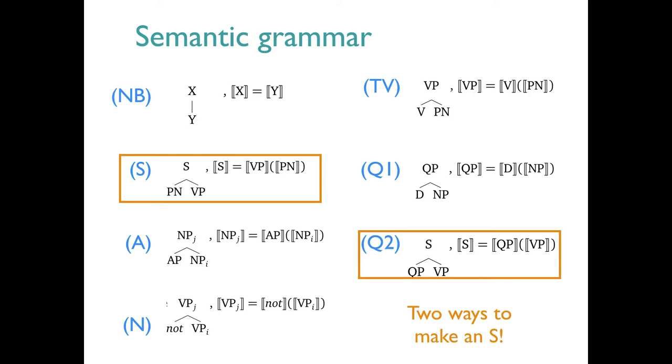Notice that they differ in which item is the functor and which is the argument. For the rule on the left, the VP is the functor. For the rule on the right, it's the QP.